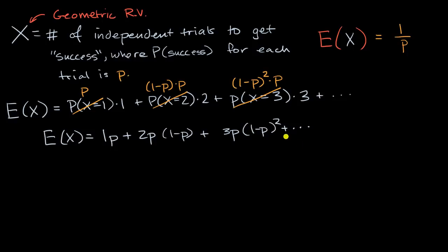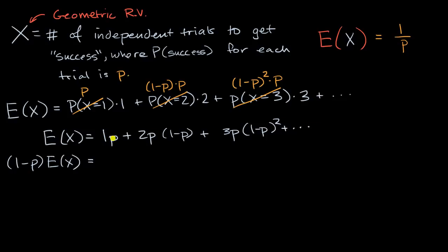How do we figure out this sum? Now I'm going to do a little bit of mathematical trickery — or gymnastics — but it's all valid. If any of you have seen the proof of taking an infinite geometric series, we're going to use a very similar technique. What I'm going to do is think about what is one minus p times this expected value. So if I say one minus p times the expected value of x, what is that going to be equal to? I would multiply every one of these terms by one minus p. So one·p times one minus p would give one·p·(one minus p).